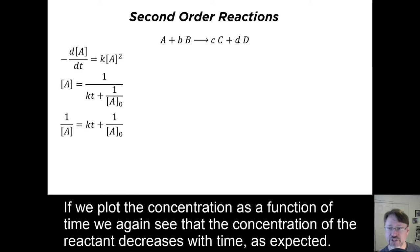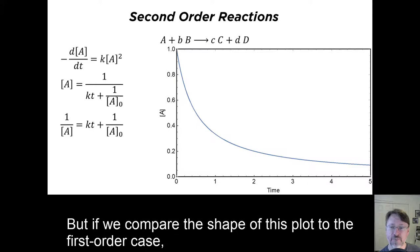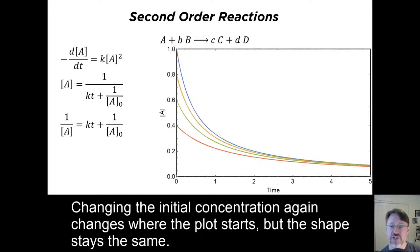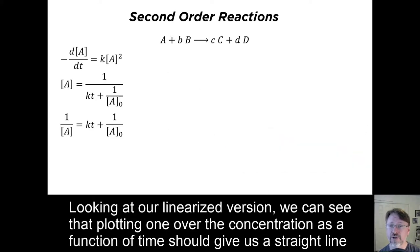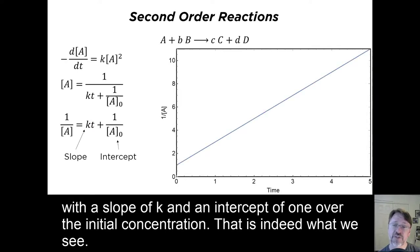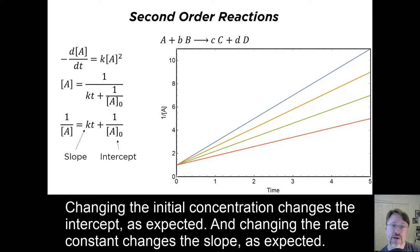If we plot the concentrations as a function of time, we again see that the concentration of the reactant decreases with time, as expected. But if we compare the shape of this plot to the first order case, we can see that the second order plot is faster at early times and slower at late times. Changing the initial concentration again changes where the plot starts, but the shape stays the same. And changing the rate constant again changes how fast the reactant disappears. Looking at our linearized version, we can see that plotting one over the concentration as a function of time should give us a straight line with a slope of k and an intercept of one over the initial concentration. That is indeed what we see. Changing the initial concentration changes the intercept, and changing the rate constant changes the slope, as expected.